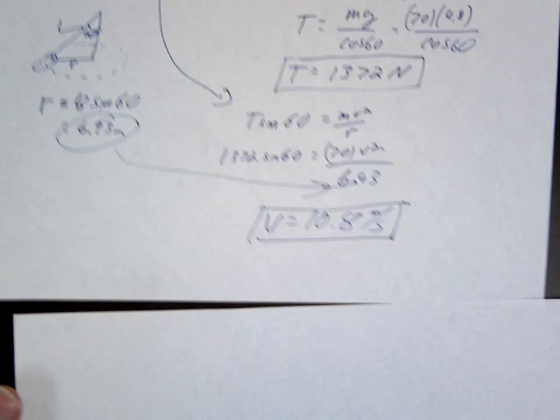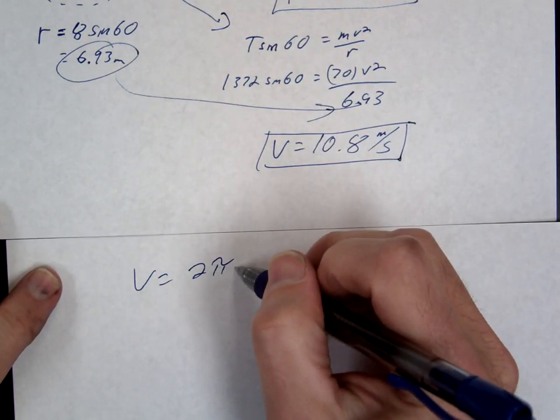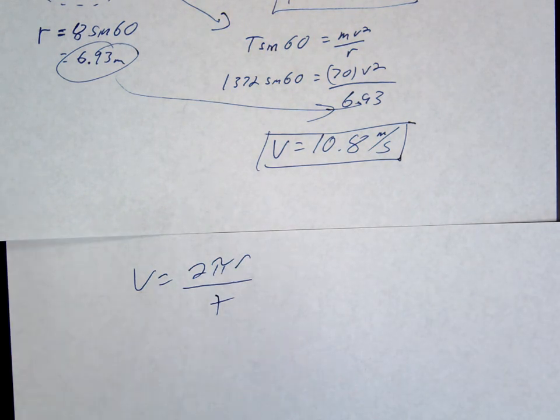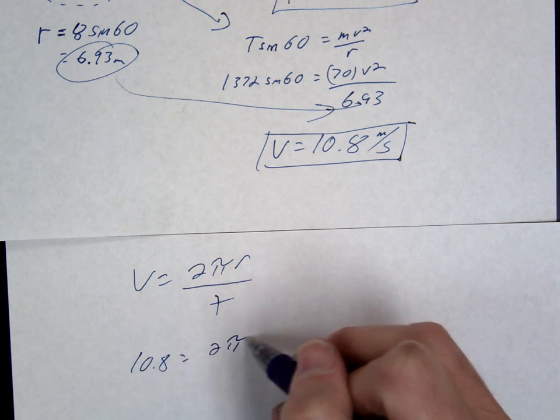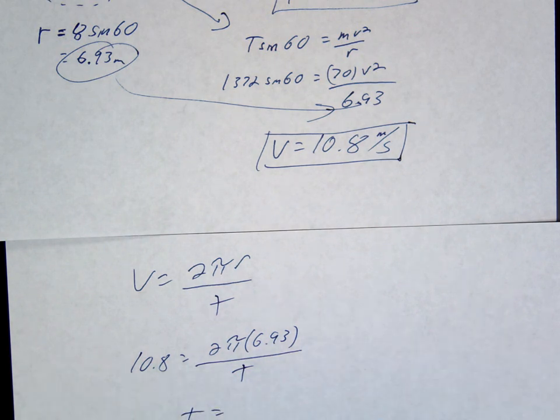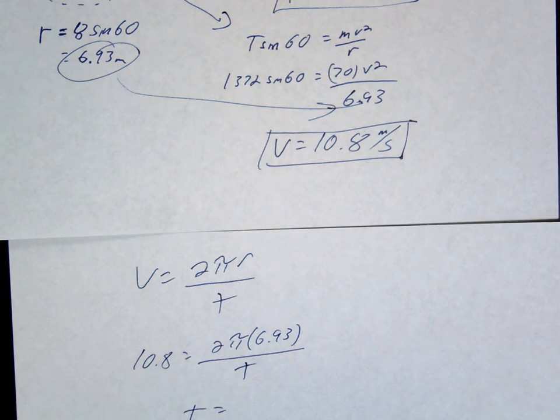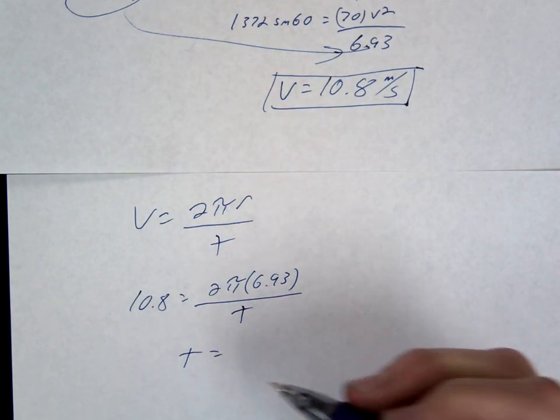All right, so we'll just go V equals 2 pi R over T. So, 10.82 equals 2 pi, again, use the 6.93 over the T. That's our period. Four point something, is that what you said?